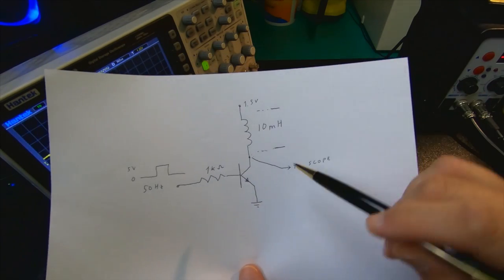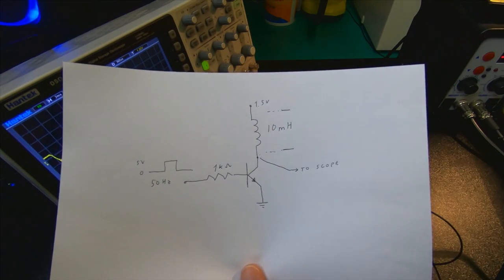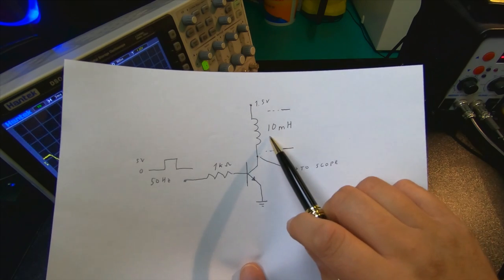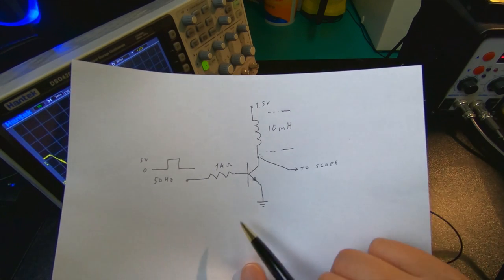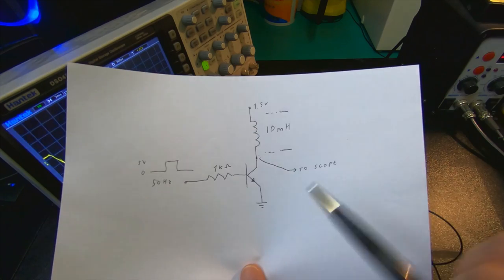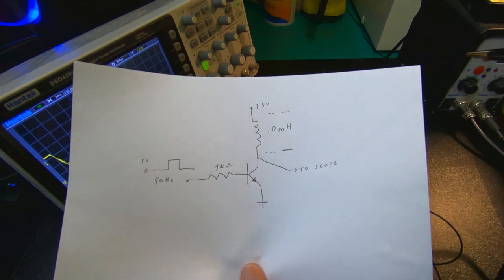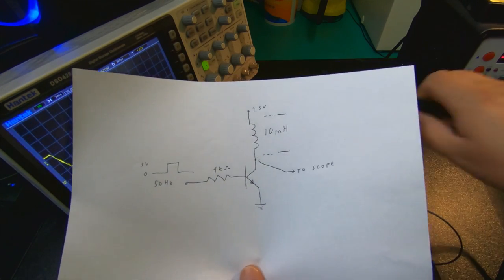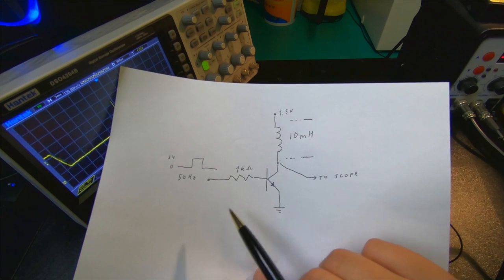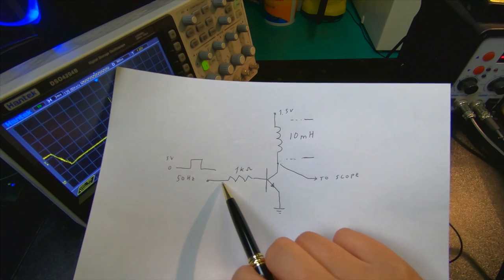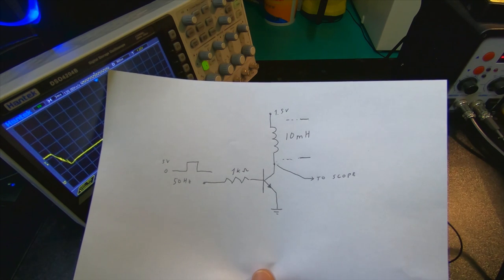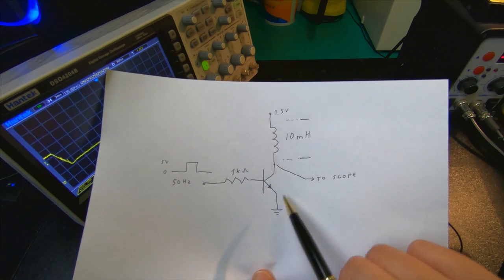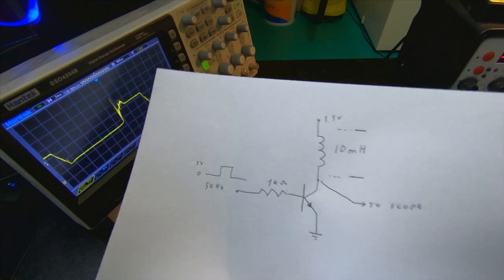So, it looks like this. We have the same transistor. And we've actually added a coil, 10 mH coil. And then we're powering it from a 1.5 volt battery, just for safety reasons. And we've got a digital signal coming in, 0-5 volts through a 1 kilo resistor to the base to switch it on and off. And then we're measuring the voltage over the transistor with the scope.